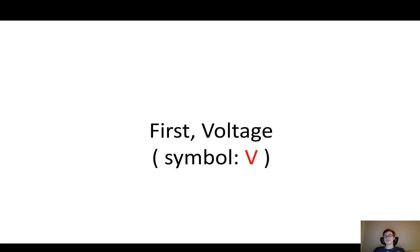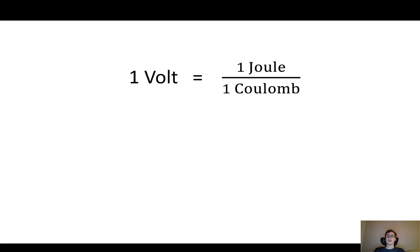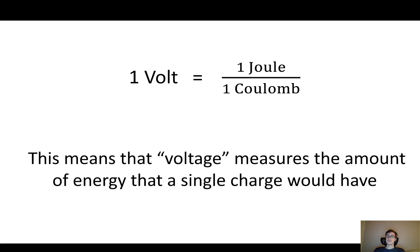First I want to talk about voltage, which in equations has the symbol V. Voltage measures the amount of energy that a charge has when you put it at a particular location in space. We measure it with the units volts, and one volt is technically defined as one joule per one Coulomb. So voltage measures the amount of energy that a single charge would have if you put it somewhere.